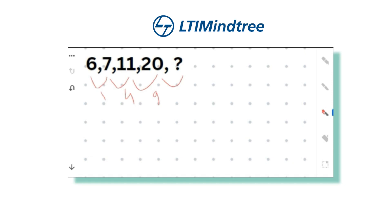The differences 1, 4, 9 follow a square pattern — that is 1 squared, 2 squared, 3 squared. So the next difference will be 4 squared, which is 16. That means the missing number is 20 plus 16, which equals 36. So the answer is 36.